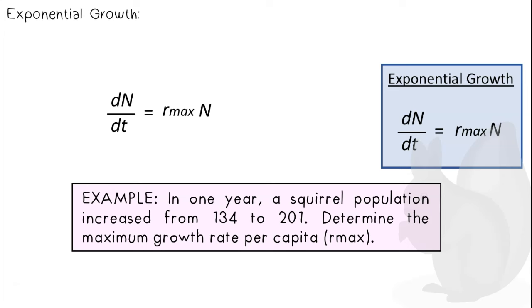In one year, a squirrel population increased from 134 to 201. Determine the maximum growth rate per capita. Note that a carrying capacity was not given, so we will use the exponential growth equation. The original population is n, that's 134. dN over dt, the amount of change in the population size, is 67. Divide to isolate rmax, and we get a value of 0.5.